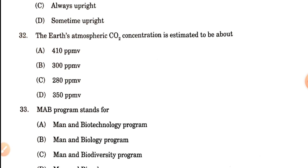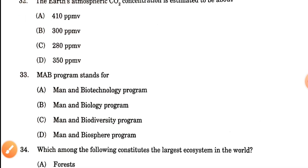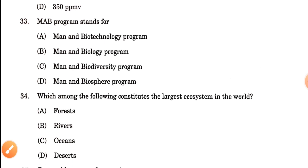Question number 32: The earth's atmospheric carbon dioxide concentration is estimated to be about what? The current CO2 concentration is about 412 to 416 parts per million. The closest option is 410 ppm. So option A is the correct answer.